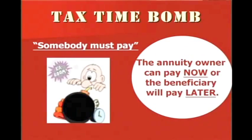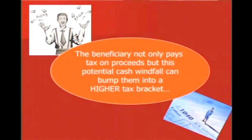The question you need to ask your client, as we show them the tax time bomb, is: somebody must pay. The annuity owner can pay now, or the beneficiary will pay later. What's the difference? The beneficiary not only pays tax on the proceeds, but this additional windfall of cash could push them up into a higher income tax bracket.